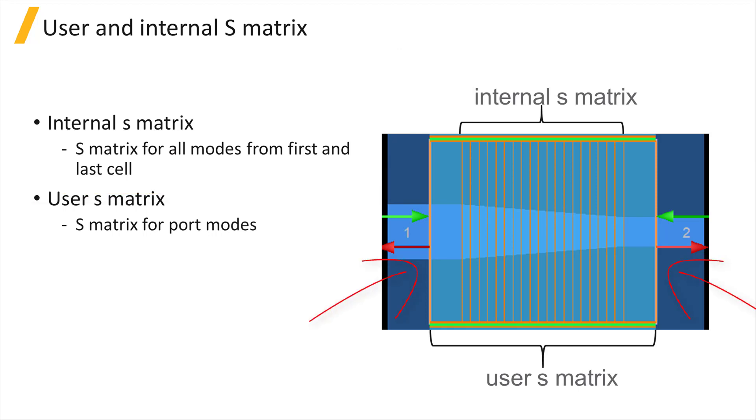Additionally, we can define ports on either end of the device at the first and last cell interfaces where we can select port modes. We can calculate the S-matrix of the device for only the selected port modes and this result is called the user S-matrix.